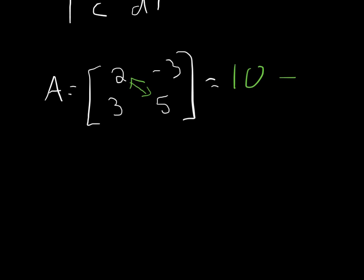And now we cross-multiply the other way. Negative 3 times 3 is going to give me negative 9, and now I subtract negative 9 from the 10. Remember, when you subtract a negative, it's addition, so 10 plus 9 is 19. So the determinant of A is 19.